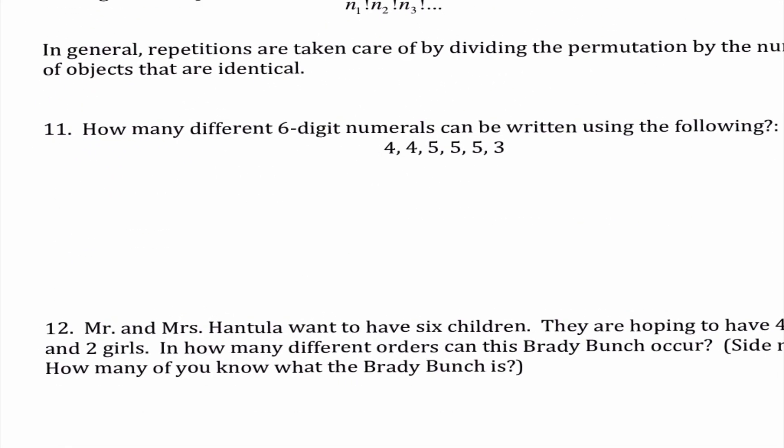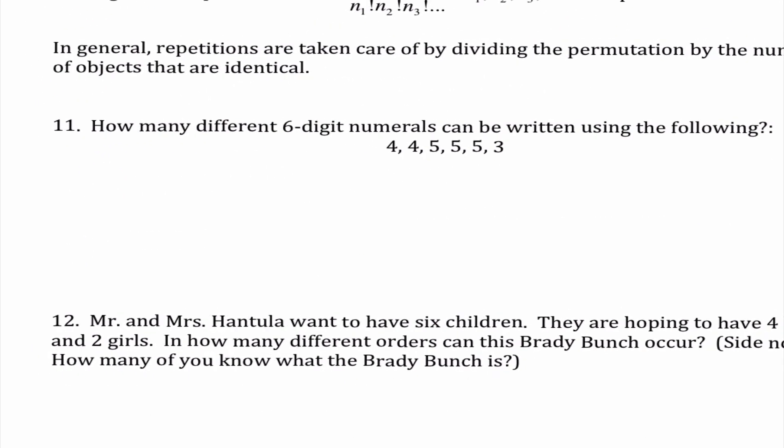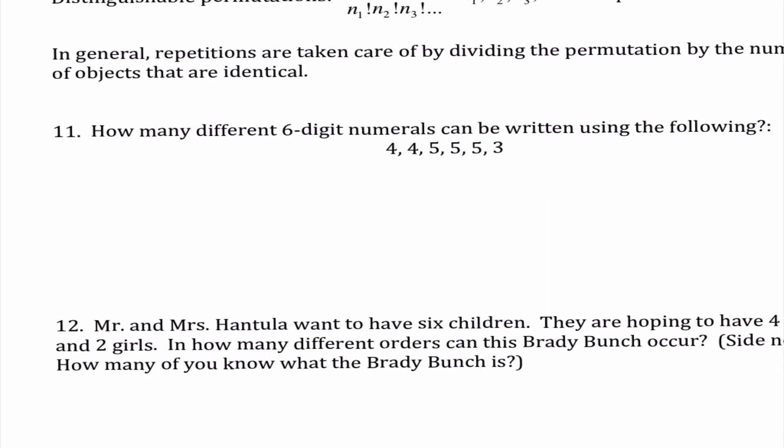And to me that sounds slightly confusing so let's look at number 11. Okay so it says how many different six digit numerals can be written using the following: 4, 4, 5, 5, 5 and 3. Okay so since I have things that are repeating I'm going to have to think about this as a distinguishable permutation. The reason being 4, 5, 3 is the same as this 4, this 5 and 3. So we have to take that into account.